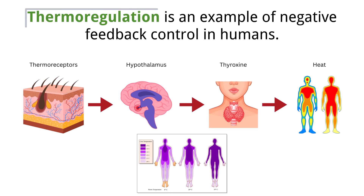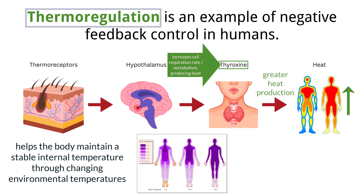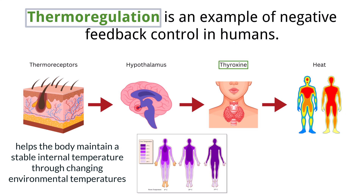Thermoregulation is another key example of negative feedback control in homeostasis, allowing the body to maintain a stable internal temperature despite changes in the external environment. One key way the body maintains its temperature is with the hormone thyroxin. Thyroxin increases the rate of cellular respiration in most body cells, which leads to greater heat production. In the context of thermoregulation, thyroxin helps raise body temperature by boosting overall metabolism, especially when the body is too cold.